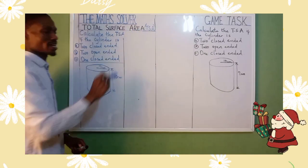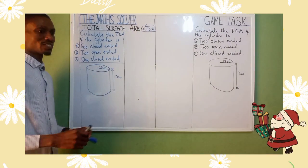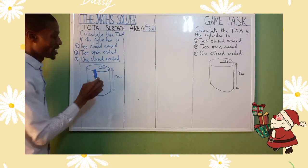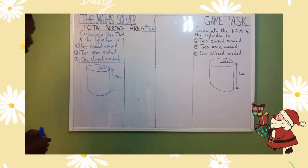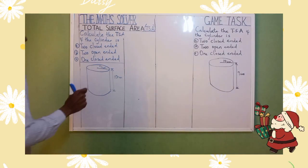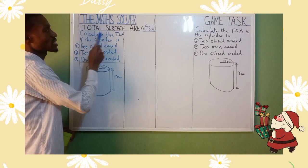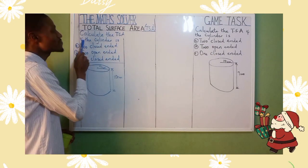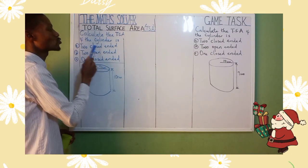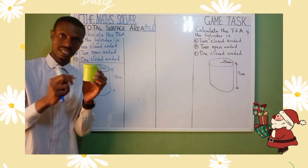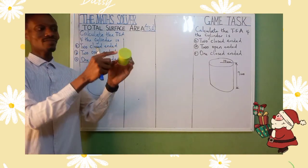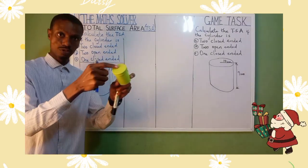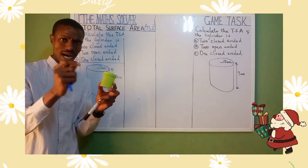Total surface area — how do we solve it? It's very simple. For this one we are doing the total surface area of a cylinder. For example, we want to calculate the total surface area if the cylinder is two closed-ended. This is an example of a cylinder — you can see it's closed ended on both sides.